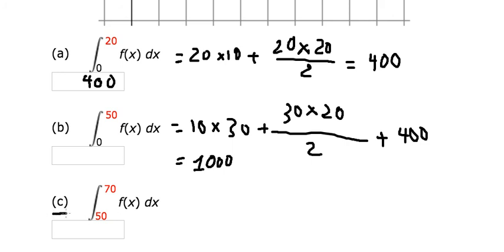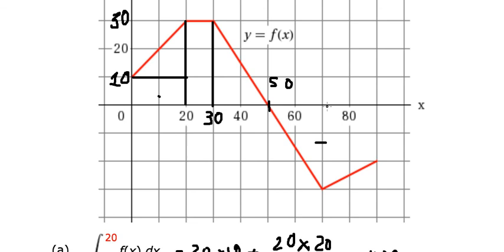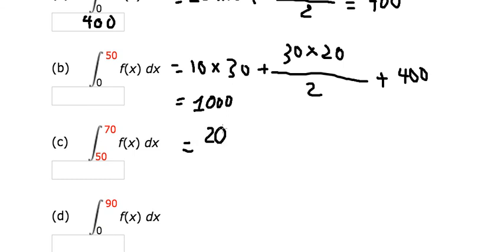Now question C: the integration from 50 to number 70. If we look carefully, this region is below the x-axis, so we need to use a negative number. From 50 to 70 we have 20, and from here to here we have negative 30. So we have 20 multiplied by negative 30 over 2, giving us negative 300.